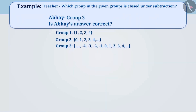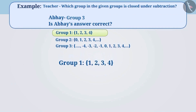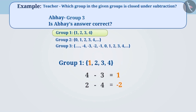Let's find out if group 1 is closed under subtraction. We will subtract the numbers of this group to find out if the resulting number is part of the same group. By subtracting the larger number from a smaller number, we get a result which is also a number of the same group. But while subtracting a smaller number from a larger number, a negative number is obtained, which is not part of group 1. Therefore, group 1 is not closed under subtraction.